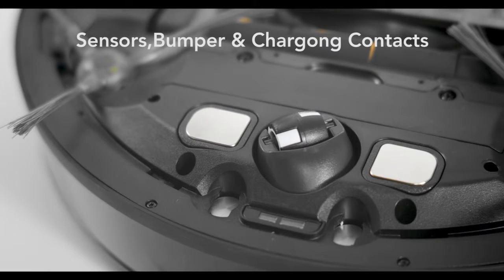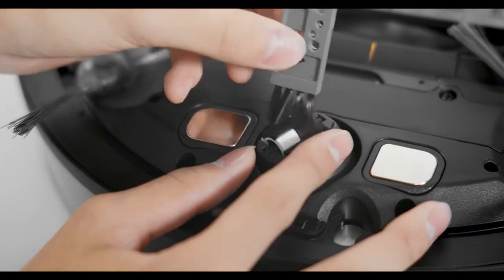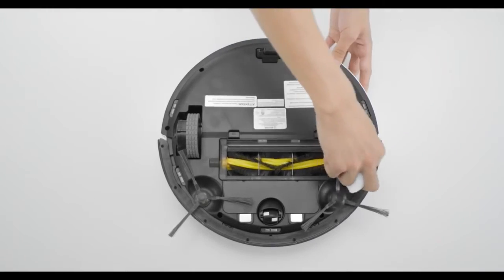A weekly cleaning is suggested for the following components. Remove any hair or debris tangled around the universal wheel. Use a dry mop to clean the anti-drop sensors.